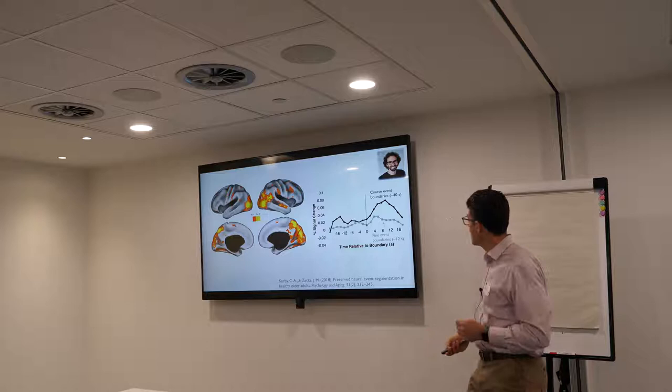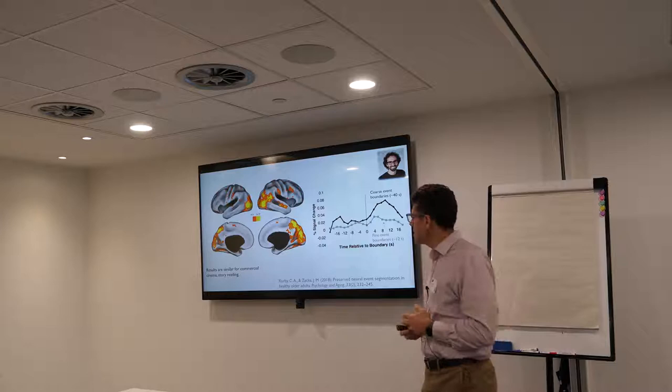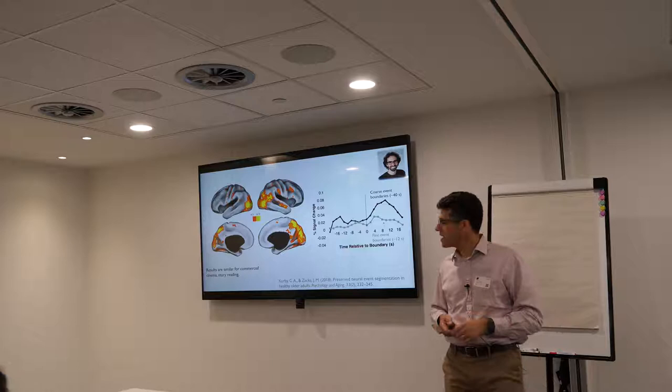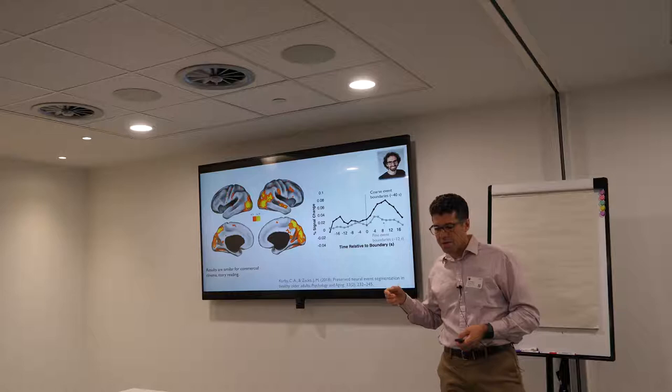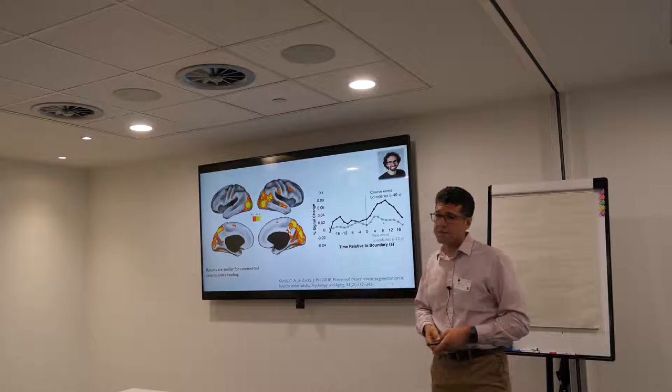These responses are surprisingly robust. You can get them for movies of everyday activities, for commercial cinema, and even when people are just reading stories in a scanner one word at a time — where there's no confounding change in the visual stimulus. You see almost all of this system; you'd miss a little bit of the early visual areas, but the rest hangs in there.